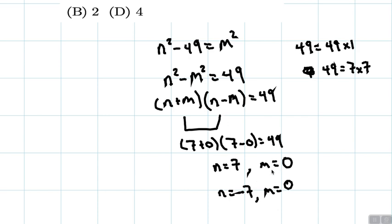And also we can't have m equal to 7 or negative 7 because if we plug that in here, then this number is going to be smaller. It's going to be negative 49 if we were to flip these around. So these are the two ordered pairs that we found in this instance.